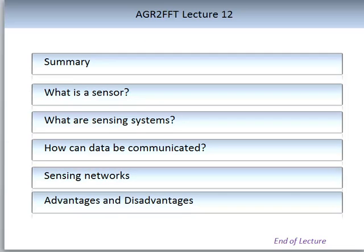This brings me to the end of this lecture. Hopefully you now understand what a sensor is, what makes up sensing systems, and can describe the concept of one. You'll be able to describe the inputs of a conceptual sensing system, understand the limitations of communicating data, understand important aspects of sensing networks, and we have touched on the generic advantages and disadvantages of sensing. This is the end of Lecture 12 Part 1 — please now watch Lecture 12 Part 2 for different types of sensing and some commercial examples.